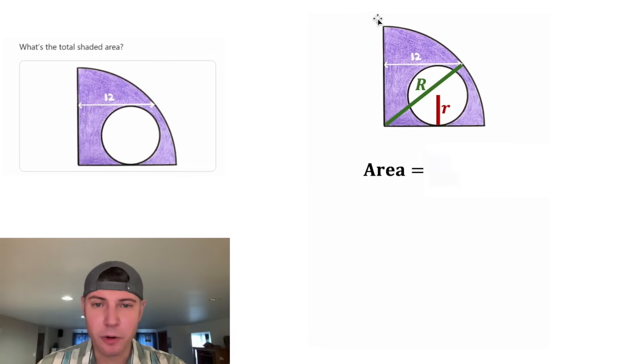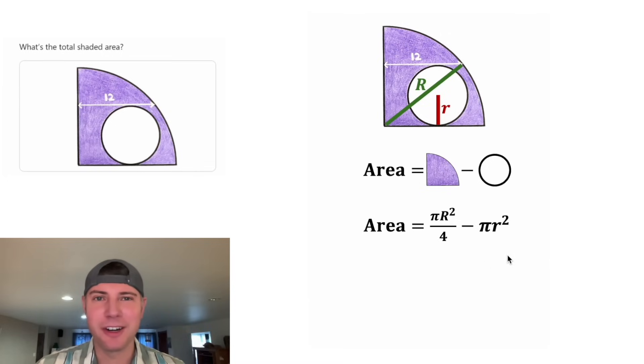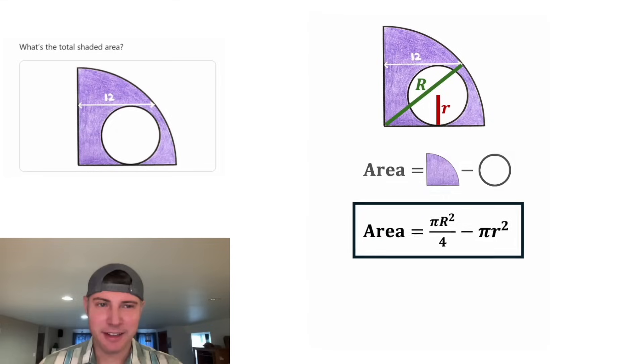It's gonna be the area of the quarter circle minus this little circle. The area of the quarter circle will be π R² divided by 4. And the area of the little circle will be π r². This is what we're trying to solve for. Let's put a box around it and let's move it down here.